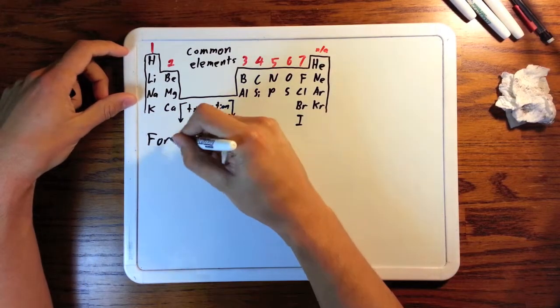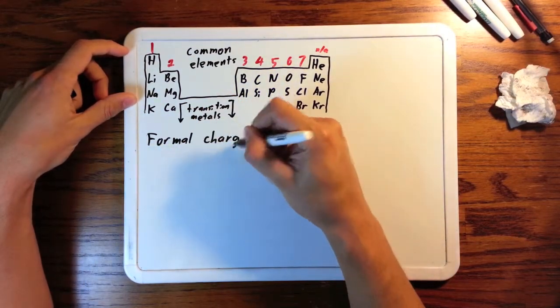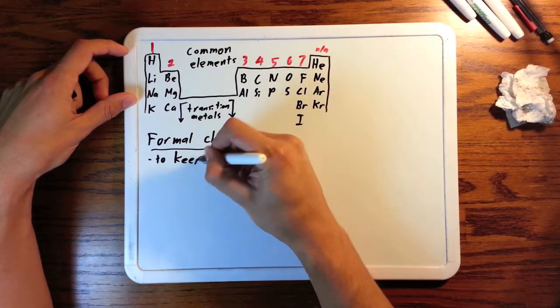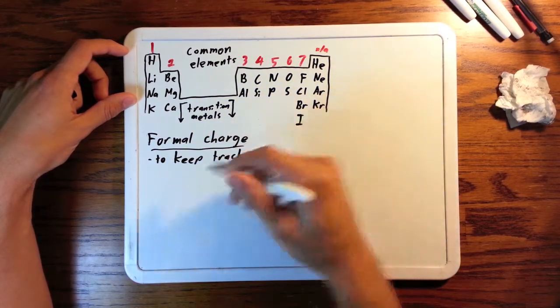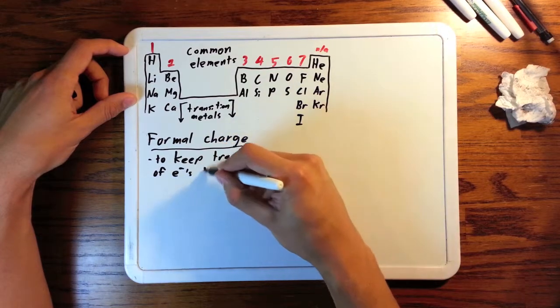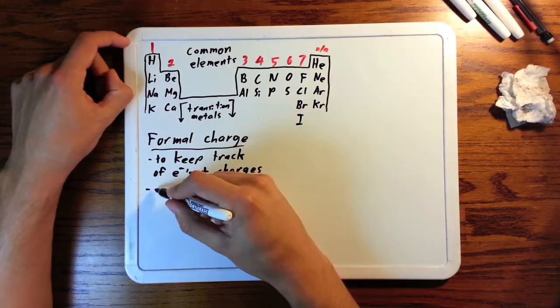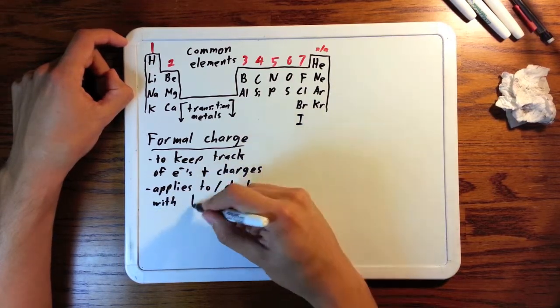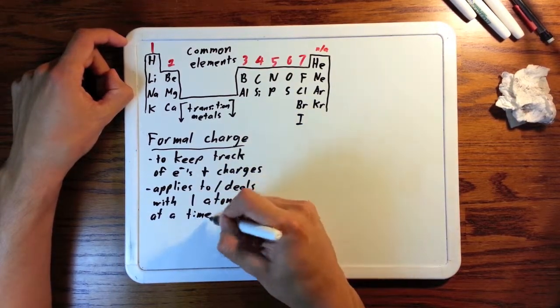Now we're going to look at formal charge. Formal charge is very useful for keeping track of electrons when reactions are happening one after the other. It also helps us keep track of whether or not this molecule overall is charged. You'll see that formal charge applies to one atom at a time within a molecule as opposed to the molecule as a whole.